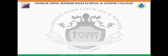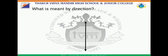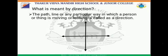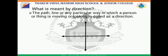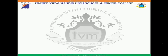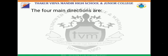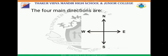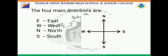Directions — what is meant by direction? My dear students, the path, line, or any particular way in which a person or thing is moving or looking is called a direction. There are four main directions. The four main directions are East, West, North, and South.